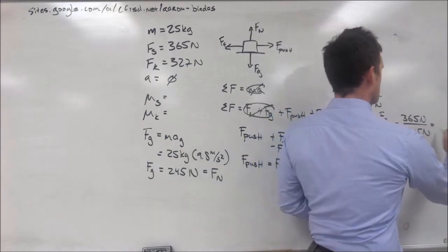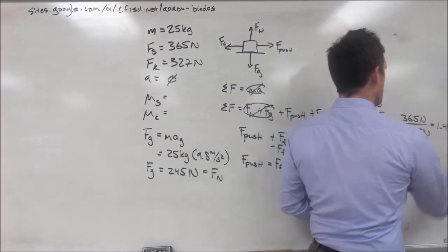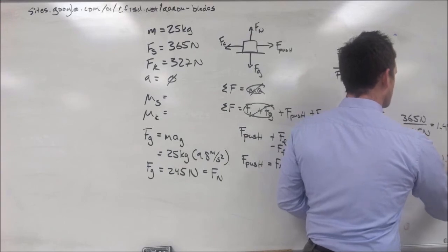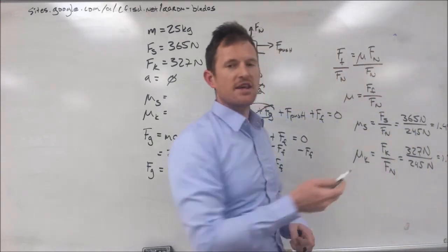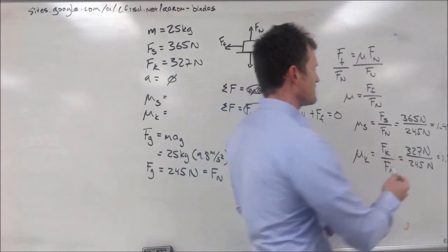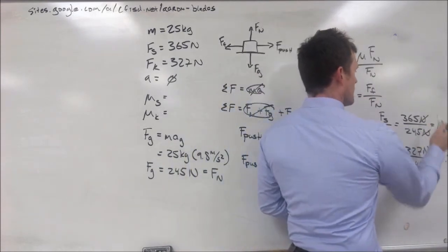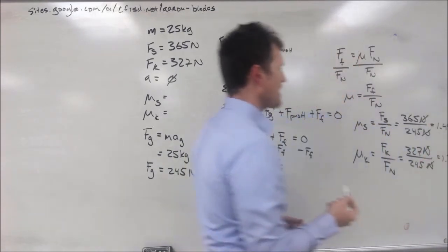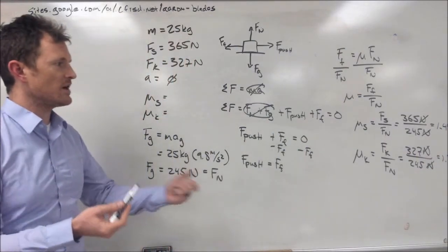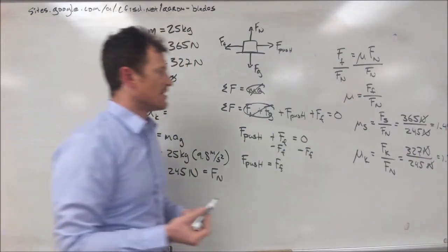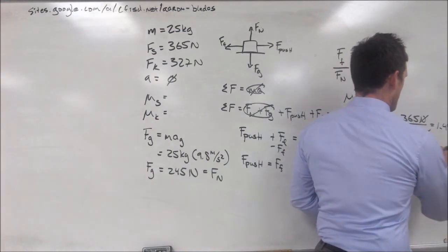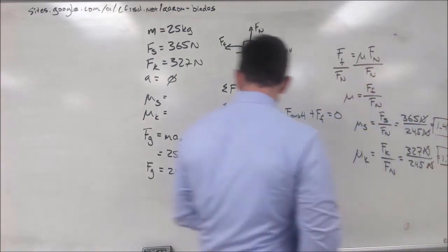Now, this one up here gives us 1.49, and this one down here gives us 1.33. Now, you'll notice that I haven't written in any units. That's because when we do our division, our units cancel out. And, that leaves us with a unitless constant. Or, a unitless value.